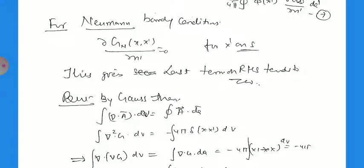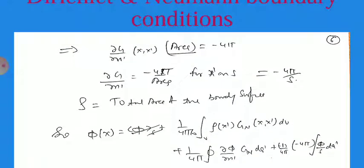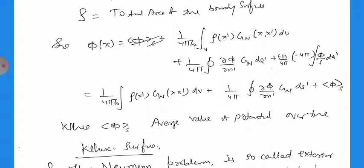For the Neumann case, since del G by del n' cannot simply be zero everywhere (by Gauss's theorem), we set del G_N by del n' equal to minus 4 pi over S, where S is the total area of the boundary surface. The potential then becomes phi(x) equals 1 over 4 pi epsilon naught times the volume integral of rho(x') G_N dV plus 1 over 4 pi times the surface integral of del phi by del n' times G_N dA plus the average value of the potential over the given surface, phi_S.